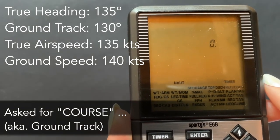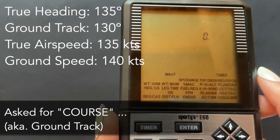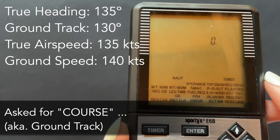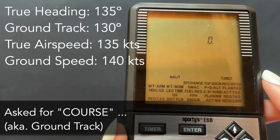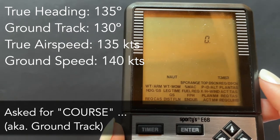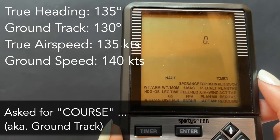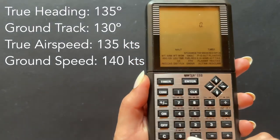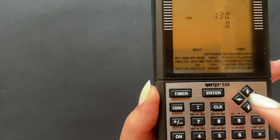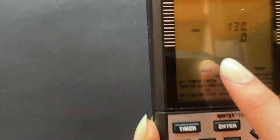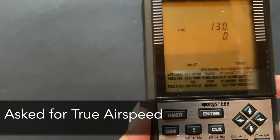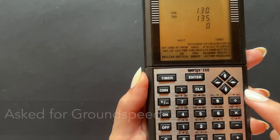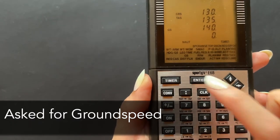Then the calculator will prompt us to enter our information one by one. Here it asks us for course. Well, if we look back at our question, there is no piece of given information that is labeled course, but this is simply an instance of aviation terminology having more than one word for the same thing. In this case, the calculator is asking for the ground track as the course, which we have 130 degrees. Type in 130 then hit the enter button. Next it asks for our given true airspeed. We will type in 135 and press enter. Next it wants our ground speed. Type in 140, press enter.